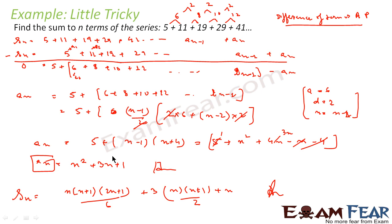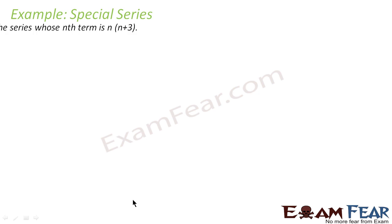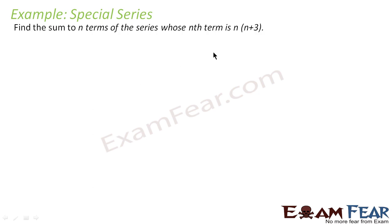In summary, when the difference of terms is in AP, we write the series in the shifted form, subtract, and obtain the an term. Once we have the an term, we can very simply find Sn. We will take one more example. We are told to find the sum of n terms whose nth term is n(n+1).